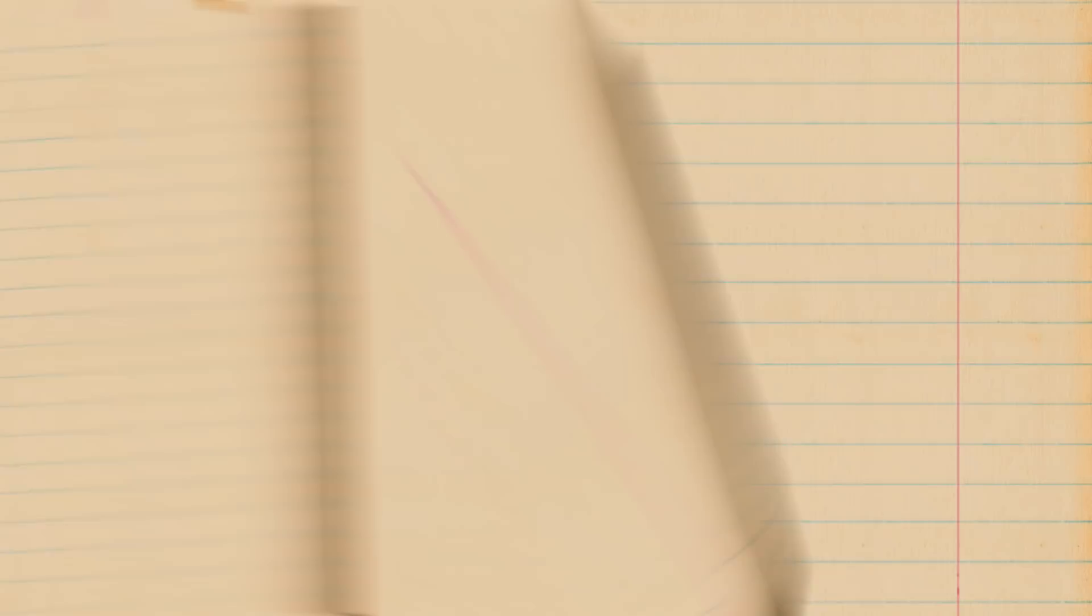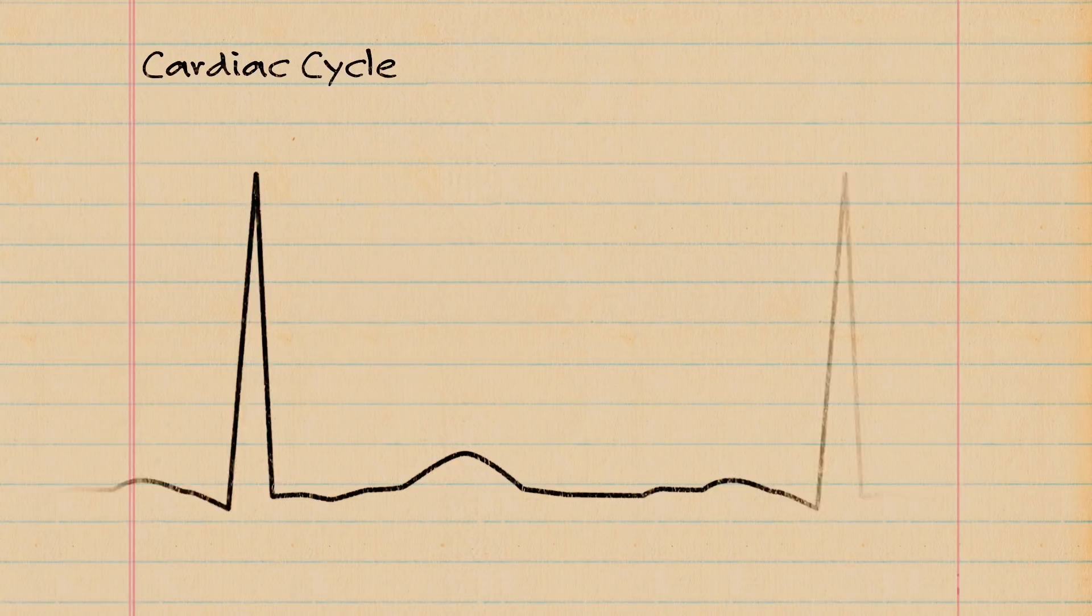The human heart is one such example. It includes the phase of contraction, systole, and the phase of relaxation, diastole. These phases adhere to the golden ratio of 1 to 1.618.